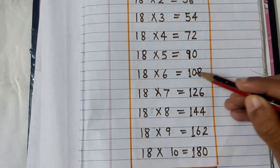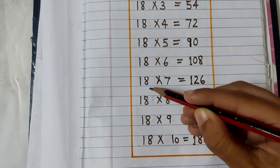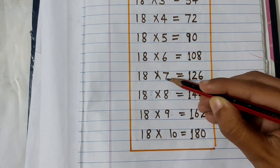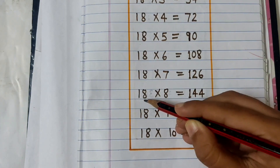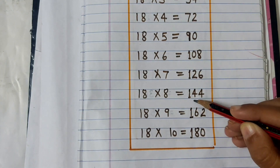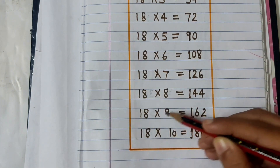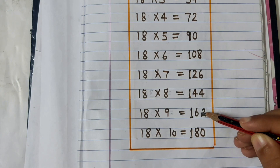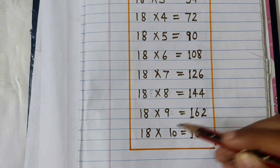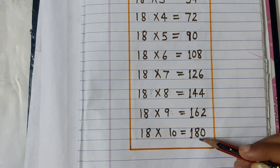18 sixes are 108. 18 sevens are 126. 18 eights are 144. 18 nines are 162. 18 tens are 180.